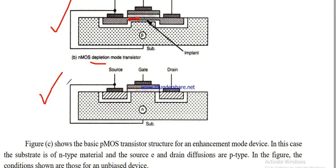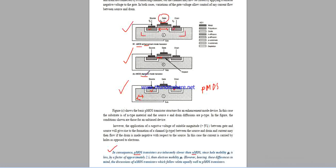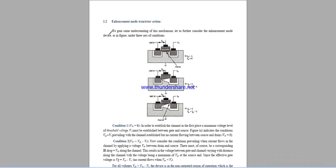Looking at the P-type MOSFET, we can see it is built on N-material substrate with source and drain regions. This is the P-type MOSFET. The N-MOSFET enhancement and depletion types are contrasted here — the first one we discuss is the enhancement type.